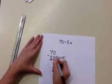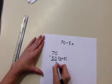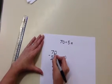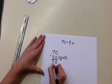Write 50 underneath 70 in the correct columns. So 0 subtract 0 is 0. 7 tens subtract 5 tens is 2 tens.